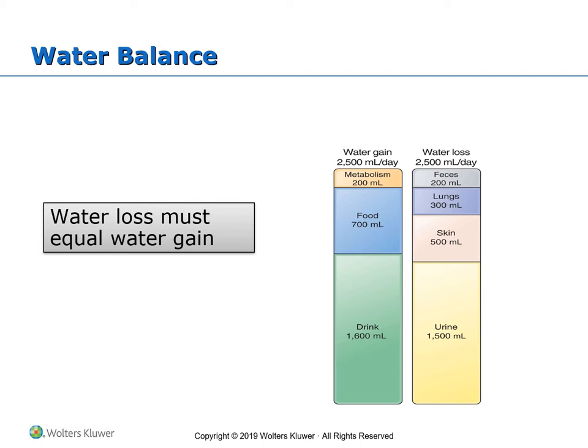On the other hand, we have water loss. In a healthy, well-balanced individual, water gain and water loss will be equal over 24 hours. The most important avenue of water loss is through the kidneys — they filter a lot of blood but eliminate only about one to one and a half liters of water daily through urine, depending on fluid intake and other losses.